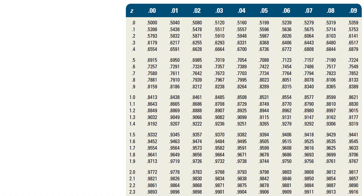However, instead of doing calculus to solve such an equation, tables were generated in the 19th century to make it easy for us to find the value of P(x) for different x values, or vice versa. These tables are called normal distribution tables. Now I will explain how to use this table.